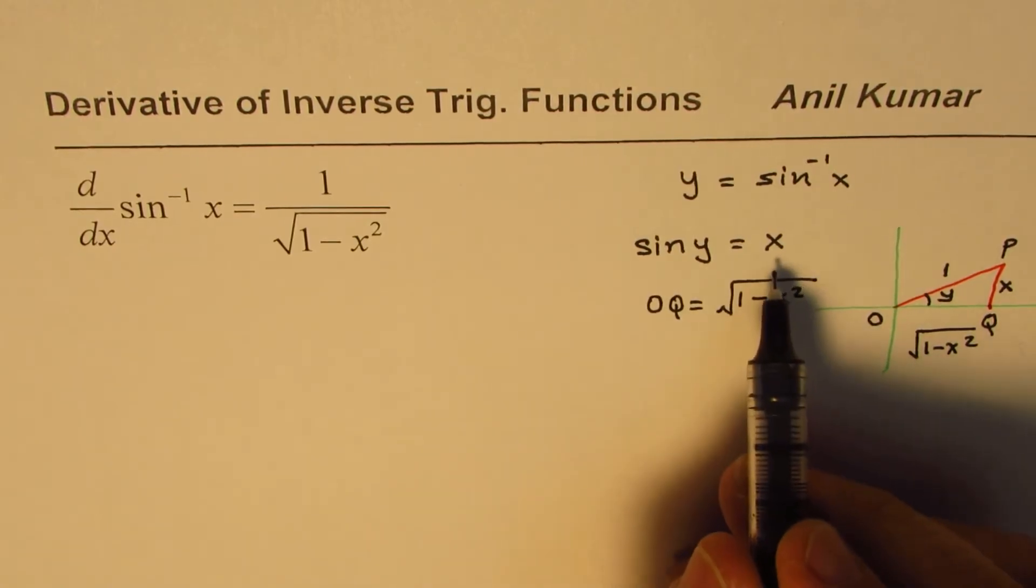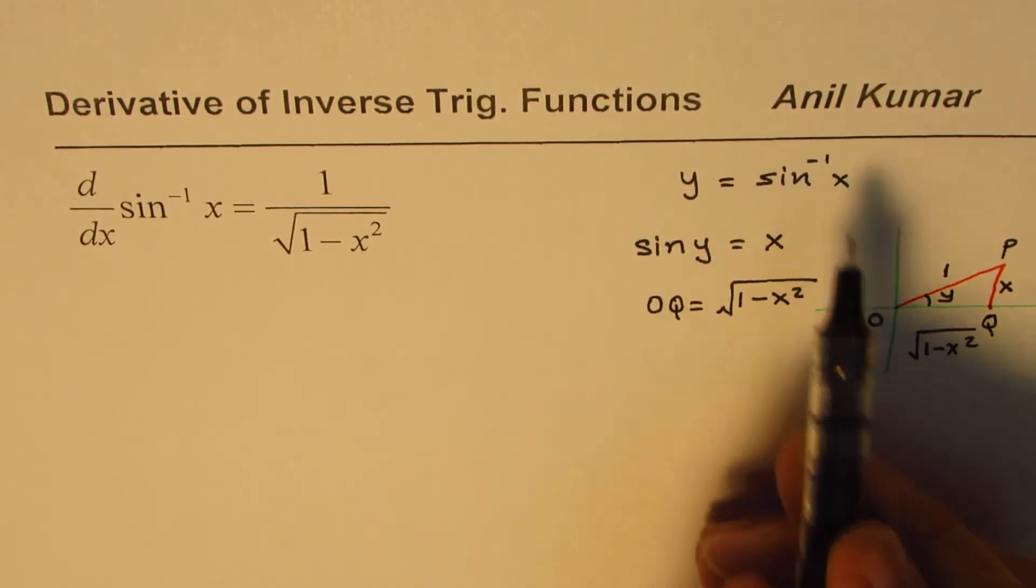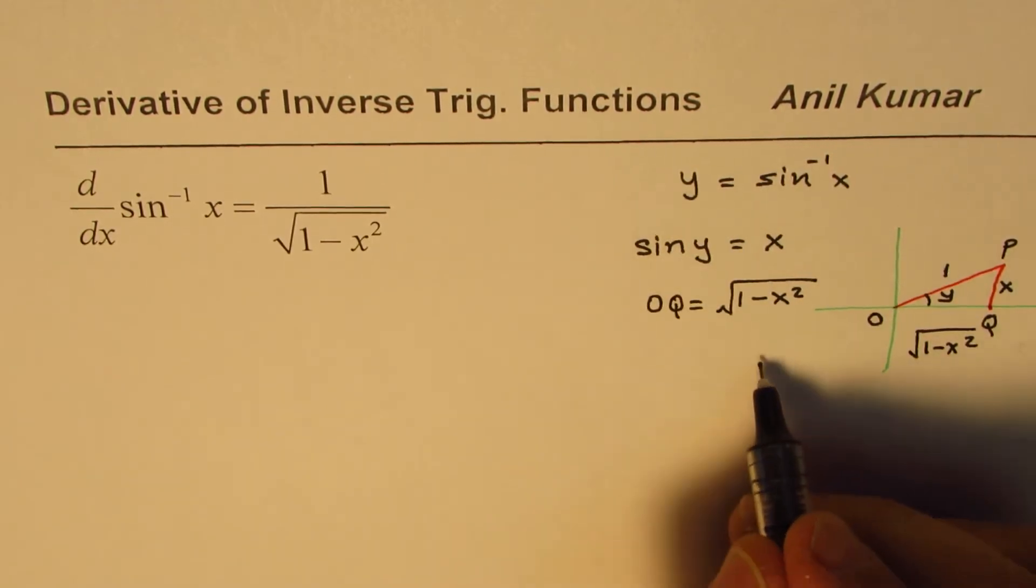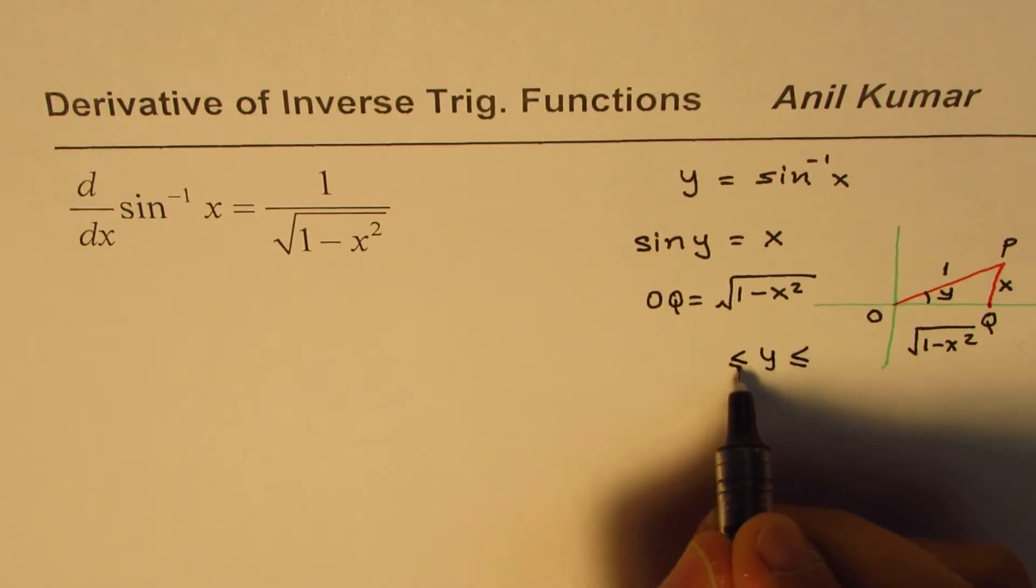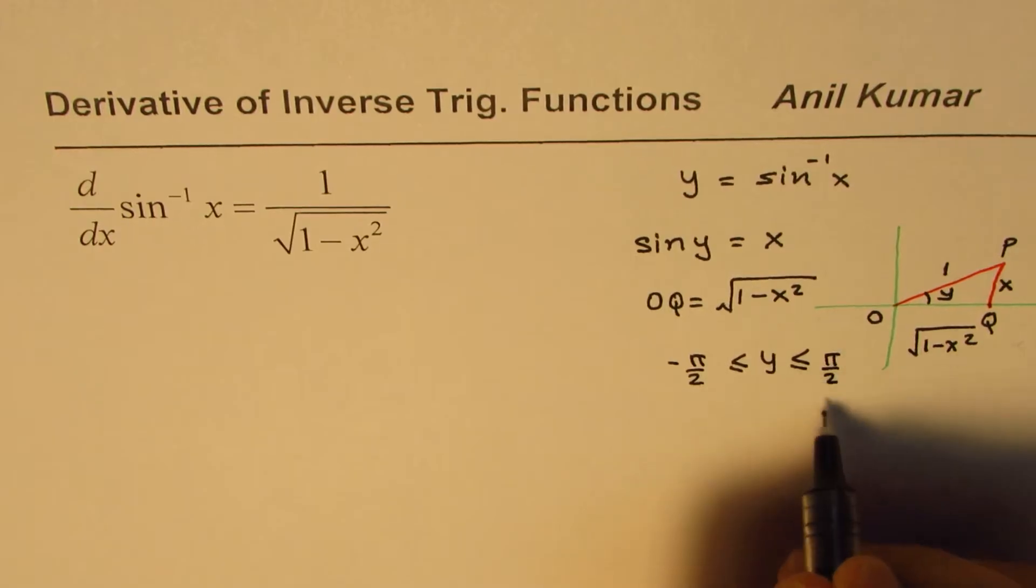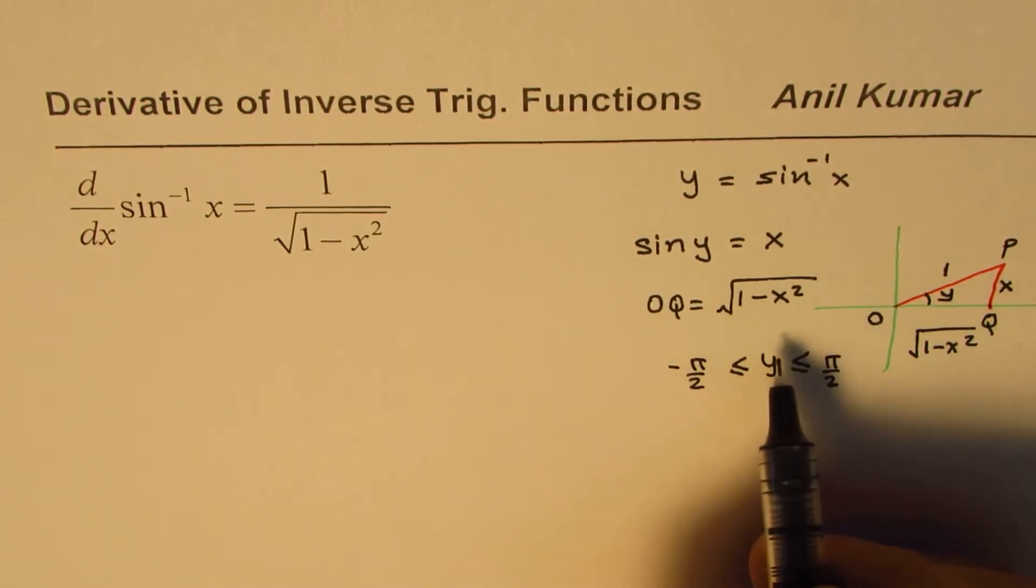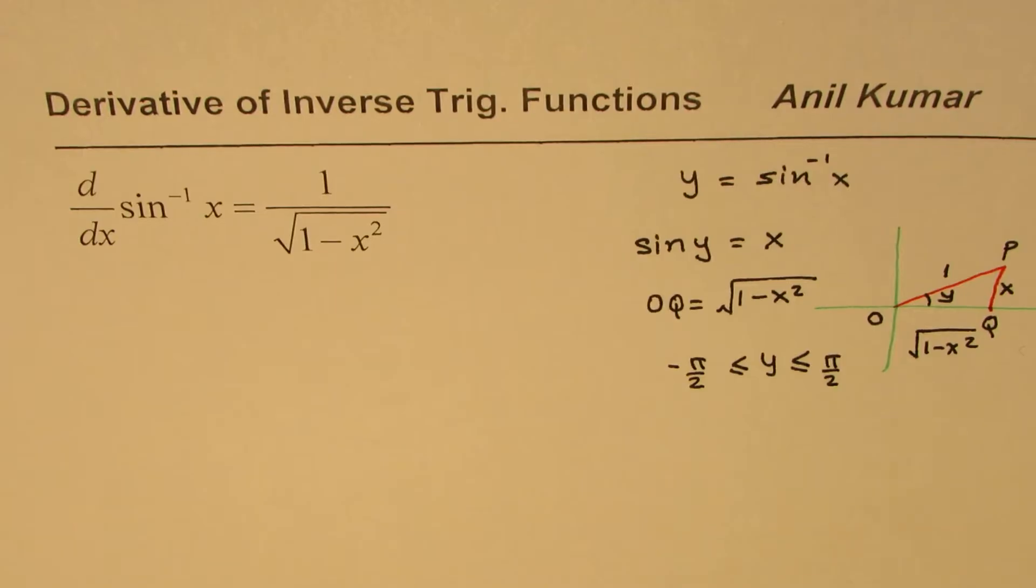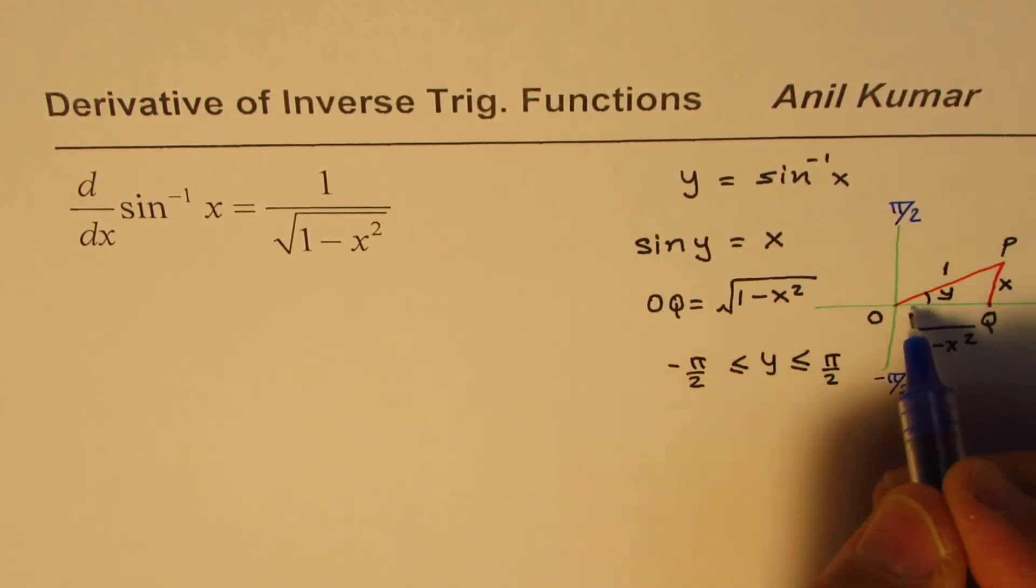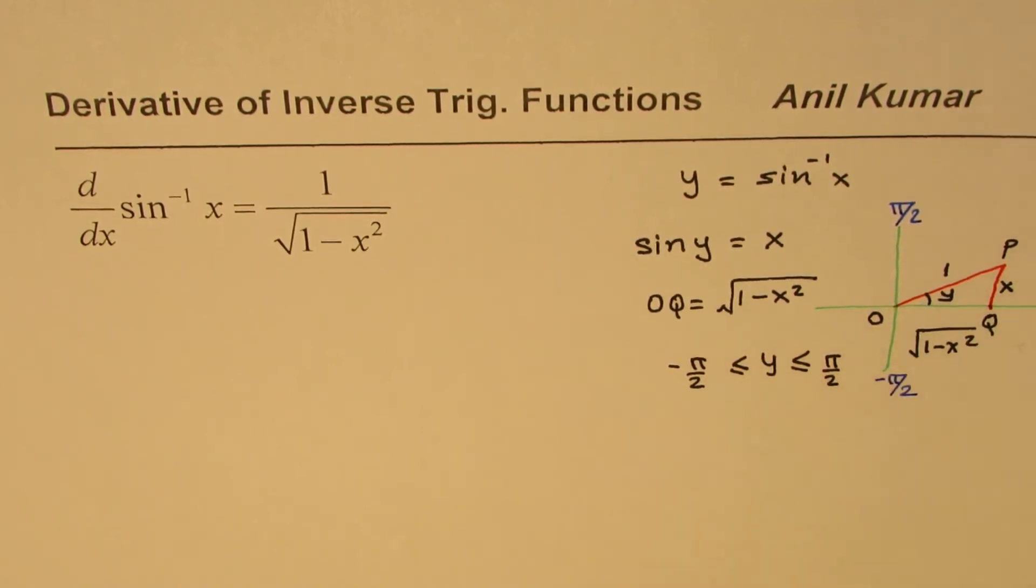Also, you should remember that sine inverse x is defined when this angle y is between what values? Minus pi by 2 and pi by 2. So that is the domain of this particular inverse function. That is to say, this is minus pi by 2, and that is pi by 2. So if you go counterclockwise positive, clockwise negative. That's the whole idea.